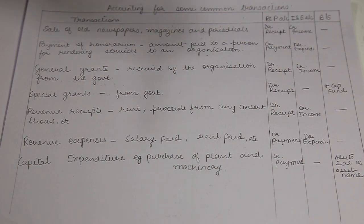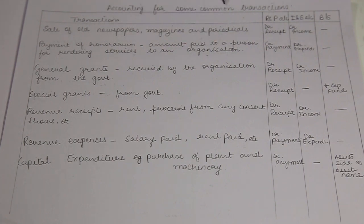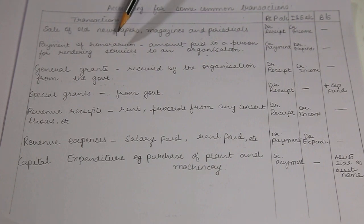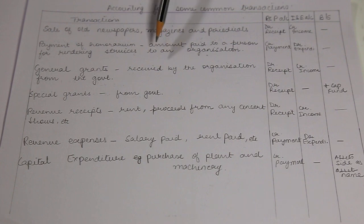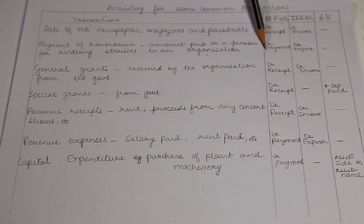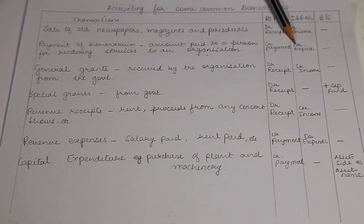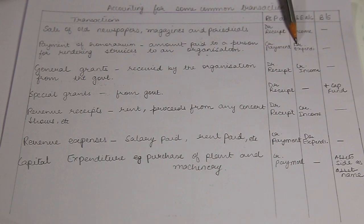Payment of honorarium — honorarium is the amount paid to a person for rendering services to an organization. When any person provides their services to the NPO, as a token of love or respect, honorarium is paid for his services. As this is an outgoing of money in the form of cash or bank, this will be credited in the receipts and payments account on the credit side as payment. In the income and expenditure account, this is considered as expense, so it will be debited as expenditure. This is our revenue expenditure, so nothing will appear in the balance sheet.